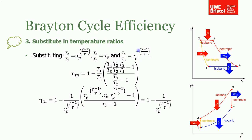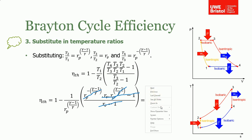Substituting all the temperature ratios into our thermal efficiency expression, we find that the (rv - 1) terms cancel top and bottom, and we're left with the final expression: thermal efficiency equals one minus one over rp^((γ-1)/γ). Gamma is a fixed property of air, so the only variable we can change in our gas turbine is the pressure ratio rp. As we increase the pressure ratio, this term gets smaller and thermal efficiency increases.